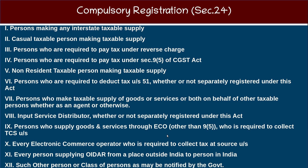Under Section 24, the following categories of persons shall be compulsorily registered under this Act, regardless of the threshold. This includes inter-state taxable persons and non-resident taxable persons.